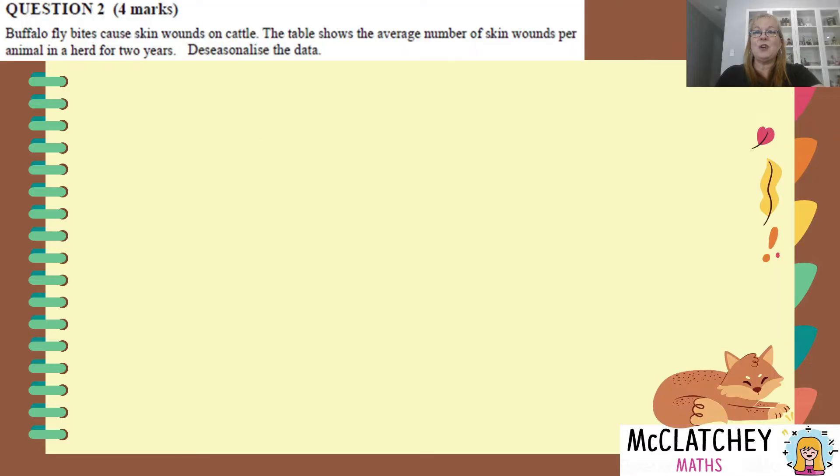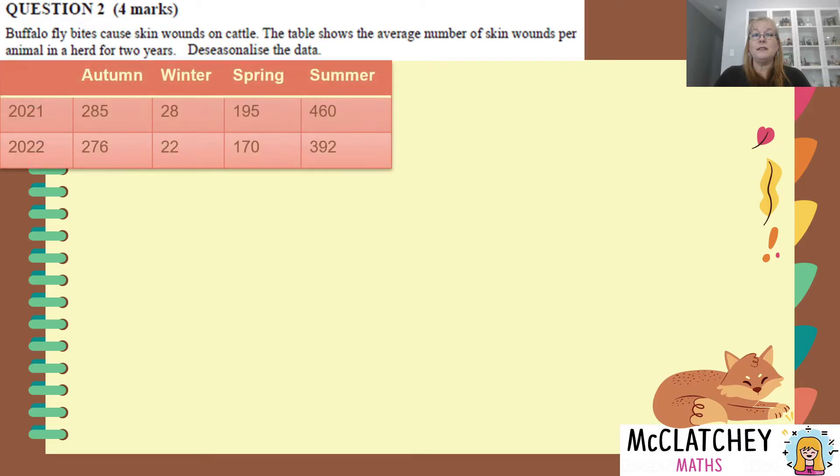Well let's get straight into question two. It's worth four marks. Buffalo fly bites cause skin wounds on cattle. The table shows the average number of skin wounds per animal in a herd for two years and we're asked to de-seasonalize the data.